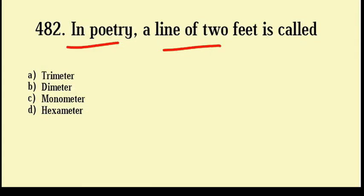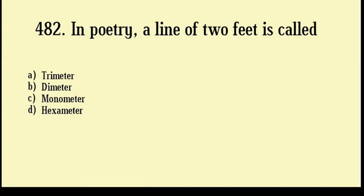In poetry, a line of two feet is called: Trimeter, Diameter, Monometer, Hexameter. Correct answer: Option number B, Diameter.